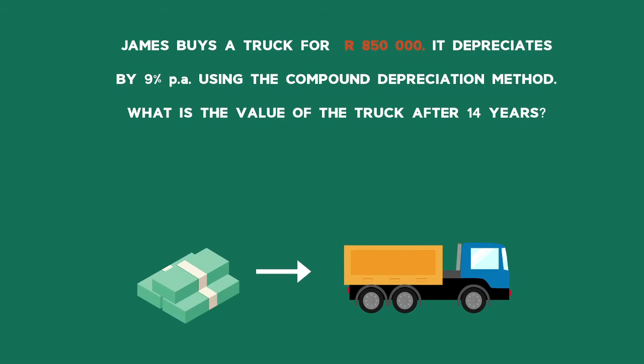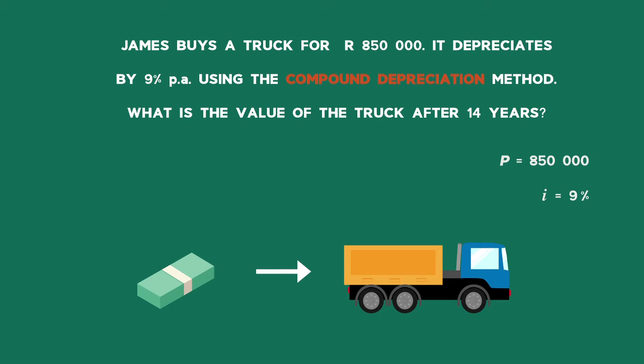James buys a truck for R850,000. It depreciates by 9% per annum. Using the compound depreciation method, what is the value of the truck after 14 years?